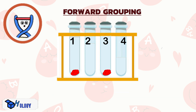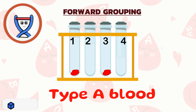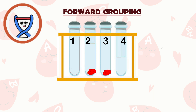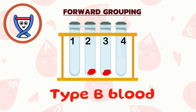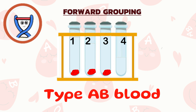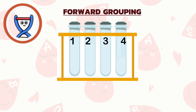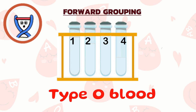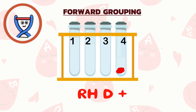Agglutination in tubes 1 and 3 indicates type A blood. Agglutination in tubes 2 and 3 indicates type B blood. Agglutination in tubes 1, 2, and 3 indicates type AB blood. Absence of agglutination in tubes 1, 2, and 3 indicates type O blood. Agglutination in tube 4 indicates RhD positive blood; absence indicates RhD negative blood.